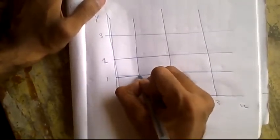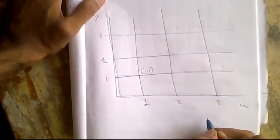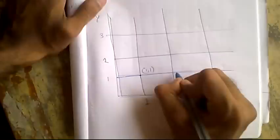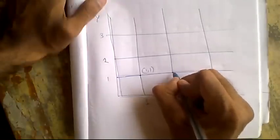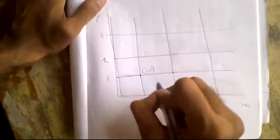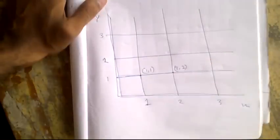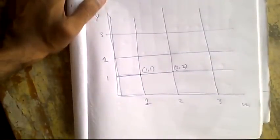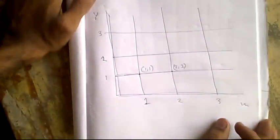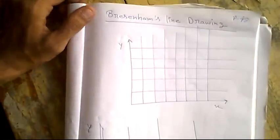This position is the (1, 1) position. And if we consider this, this position is the (2, 1) position. So this is a general graph.